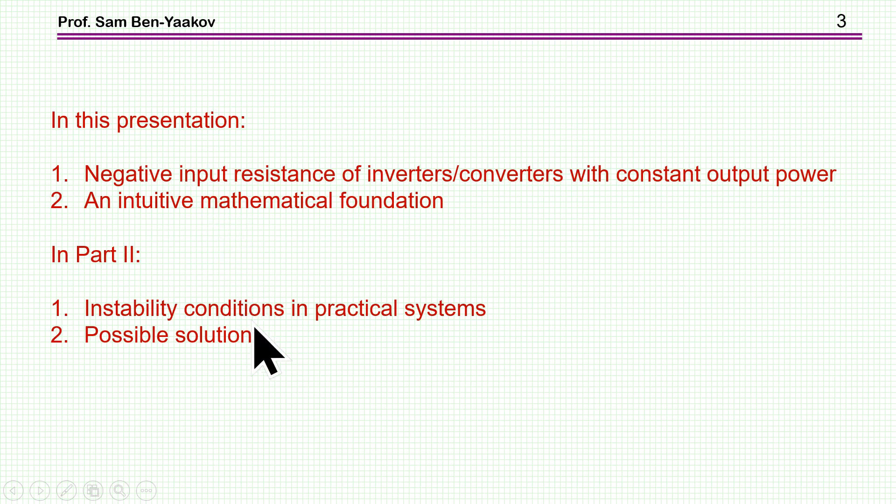This is a two-part presentation. In the first part, which is this one, I'm going to discuss the issue of negative input resistance of inverters and converters with constant output power, and then to develop an intuitive understanding of the mathematics involved and the parameters involved in this negative resistance. I'm trying to do it in an intuitive way, not too many equations, although there will be some.